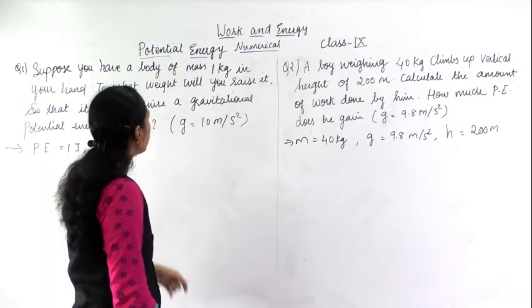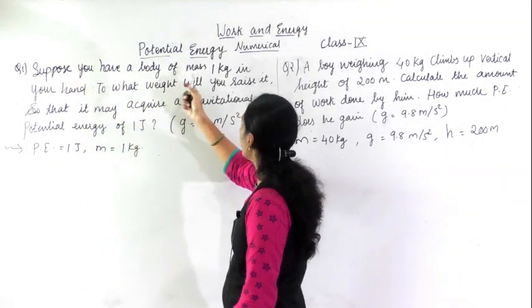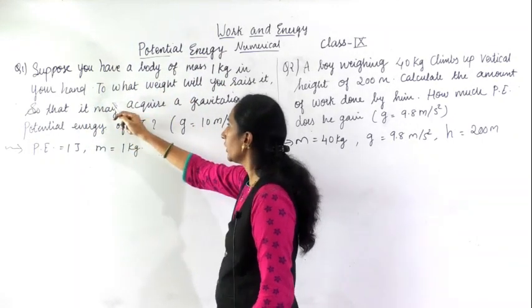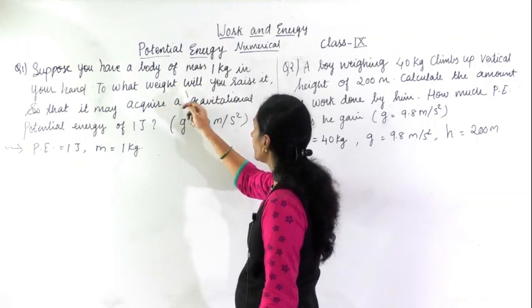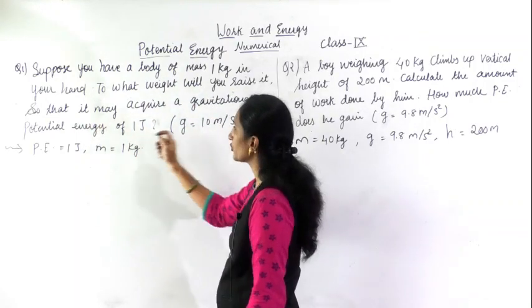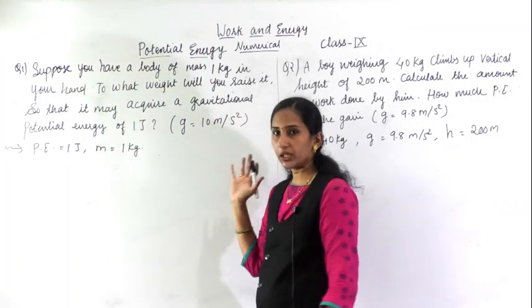We will go for the first problem. Suppose you have a body of mass 1 kg in your hand. To what height will you raise it so that it may acquire a gravitational potential energy of 1 joule? You want to find the height h.